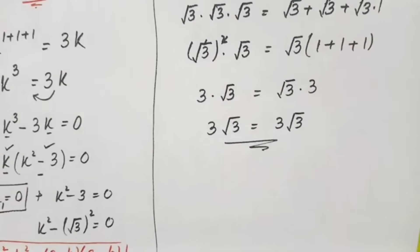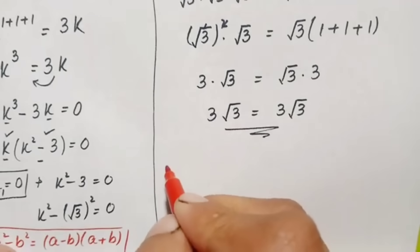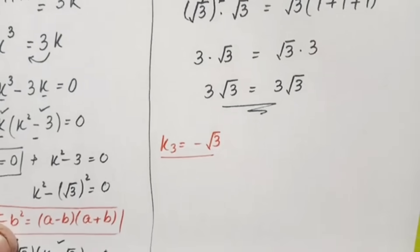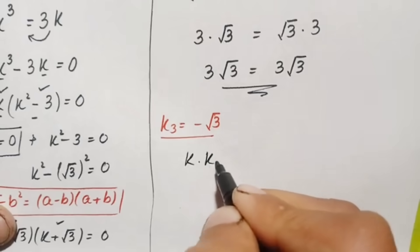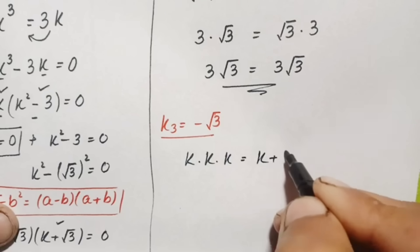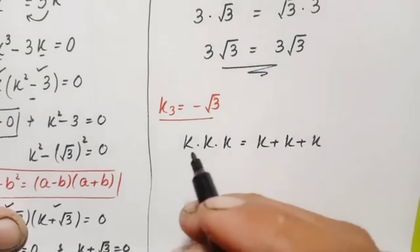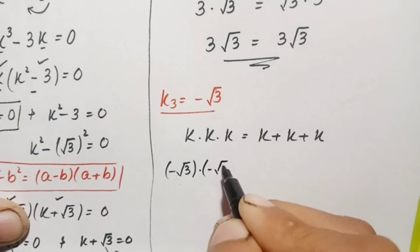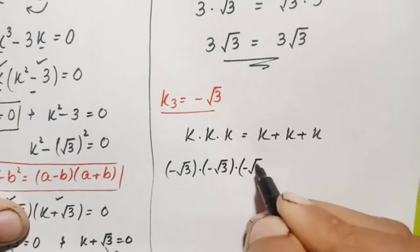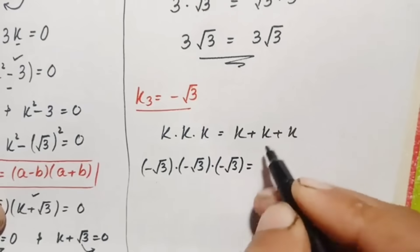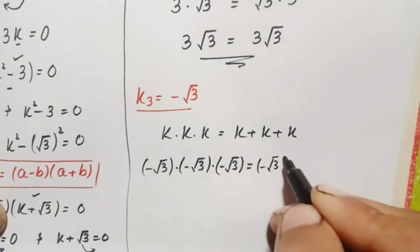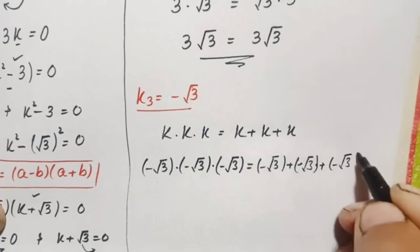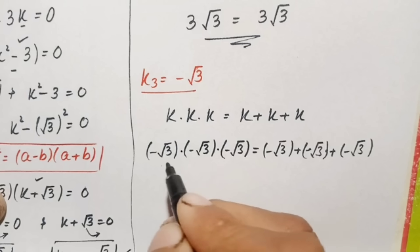Now let us verify k₃ equals negative √3. We write the problem: k times k times k equals k plus k plus k. Replacing k with negative √3: (negative √3) times (negative √3) times (negative √3) equals (negative √3) plus (negative √3) plus (negative √3).